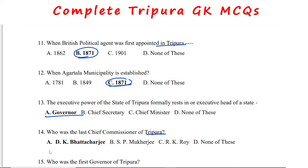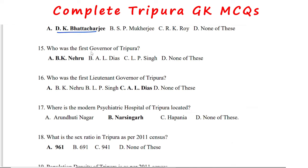The last chief commissioner of Tripura was D.K. Bhattacharji. The first Governor of Tripura was B.K. Nehru. The first Lieutenant Governor of Tripura was L. Dias. The modern psychiatric hospital of Tripura is located at Nursing.